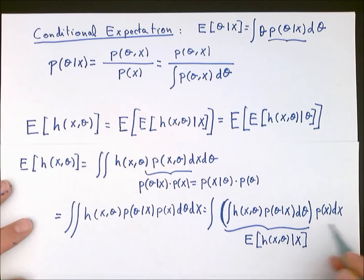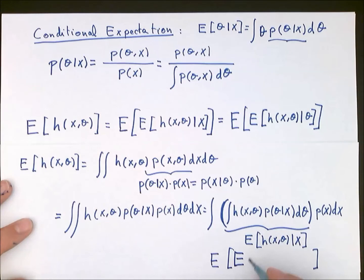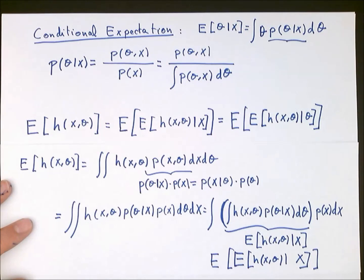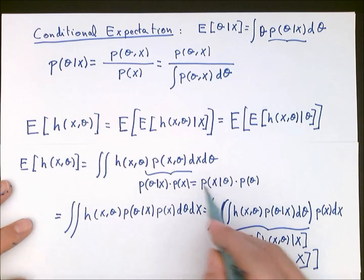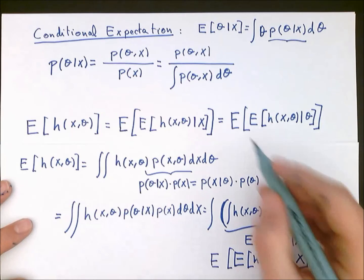The outer integral then computes another expectation — this time the expectation with respect to x. So the overall operation amounts to first computing the conditional expectation given x, then computing the expectation of that result over x. Repeating this procedure with p of x given z and p of z in place of p of z given x and p of x proves the result for the second equality.